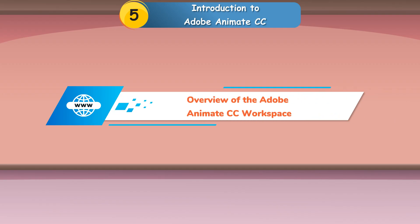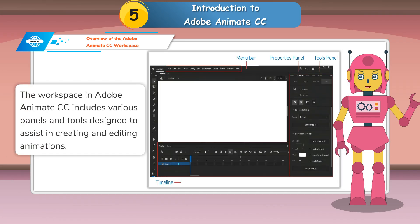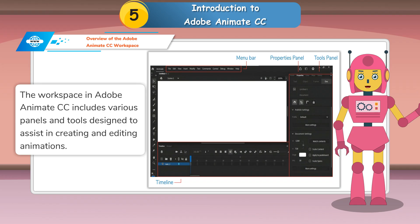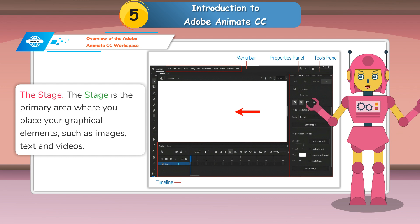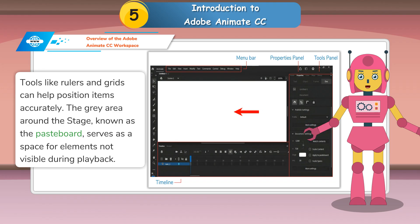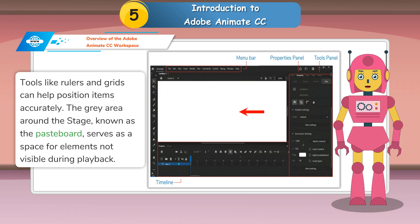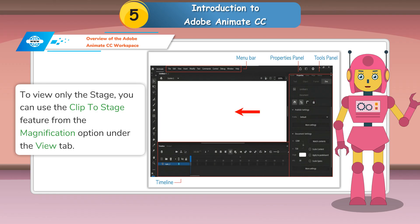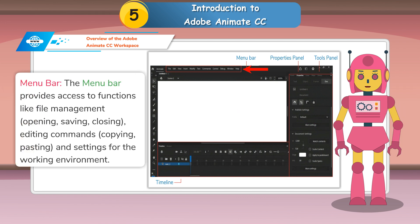Overview of the Adobe Animate CC Workspace. The workspace in Adobe Animate CC includes various panels and tools designed to assist in creating and editing animations. The Stage is the primary area where you place your graphical elements such as images, text and videos. Tools like rulers and grids can help position items accurately. The gray area around the stage, known as the Pasteboard, serves as a space for elements not visible during playback.